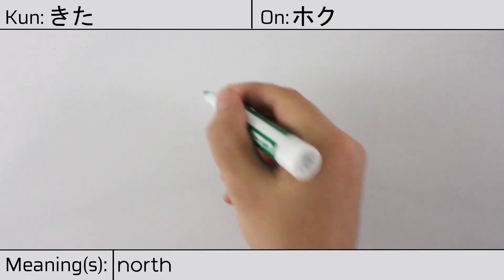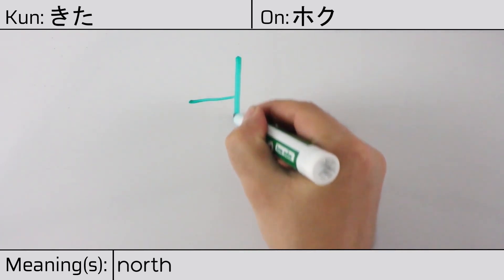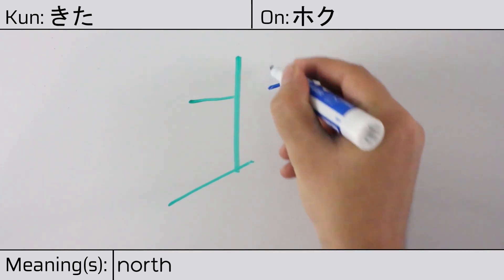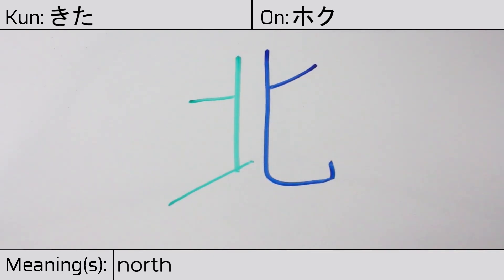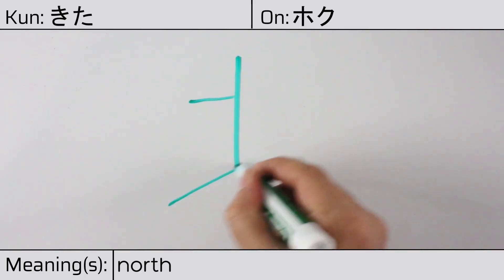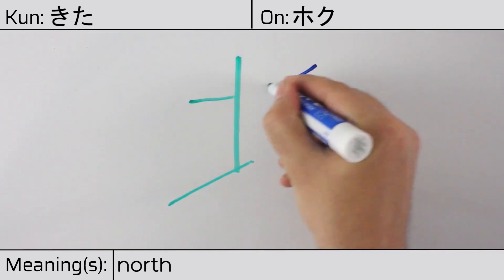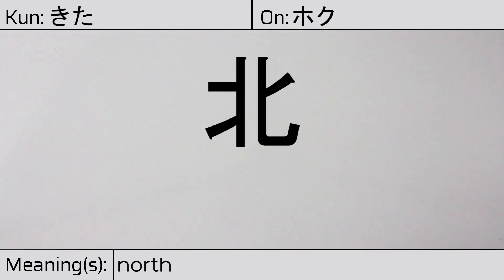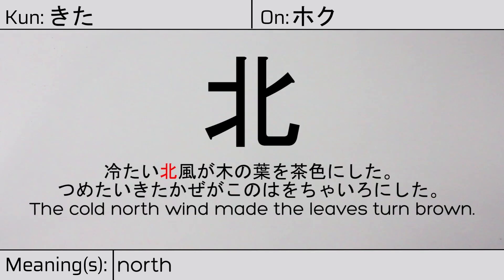This character is made up of the following radicals or parts: shouhen on the left meaning to split wood, and the spoon radical on the right. You can remember this kanji by the following hint: two people standing back to back, turning one's back to the cold north. Our example sentence is: 冷たいきた風が、この葉を茶色にした — The cold north wind made the leaves turn brown.